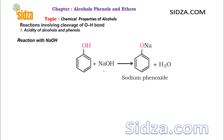Sodium hydroxide is a base, and phenol acts as an acid — it provides H⁺, which reacts with the hydroxide ion to form water. Sodium then forms a salt with the phenoxide, giving sodium phenoxide. So phenol reacts with NaOH because it is acidic enough to donate a proton to a strong base.